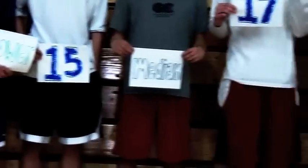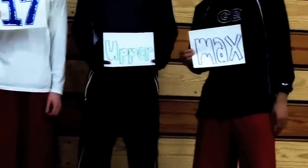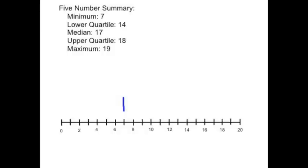We are now going to take that five number summary and create a box and whisker plot. First, create the range of our box and whisker plot. The range is from our minimum, which is 7, to our maximum, which is 19.